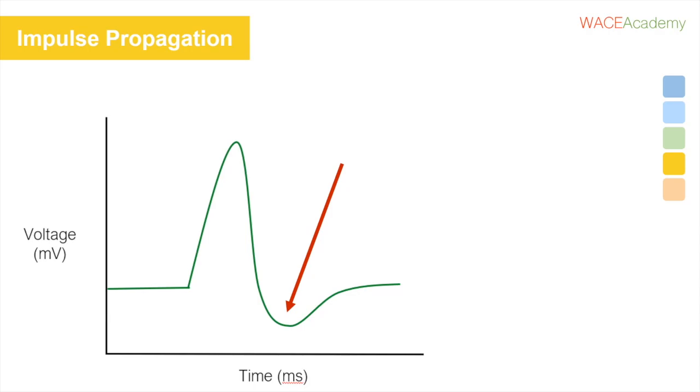This dip here in the graph happens when the sodium channels shut. The potassium channels, who are the slow guys here, still haven't figured it out and are staying open to let potassium out. That's why the charge suddenly becomes more negative than it was originally.